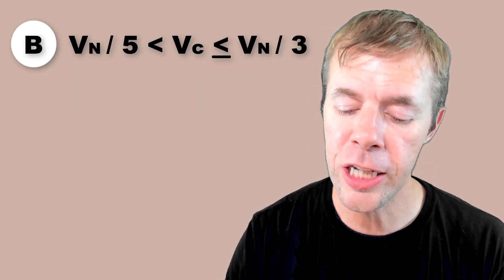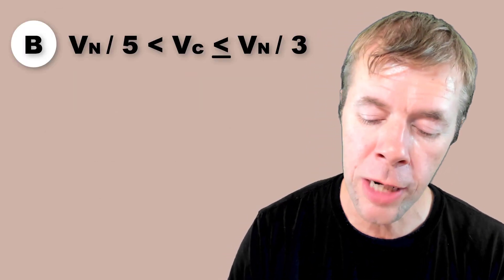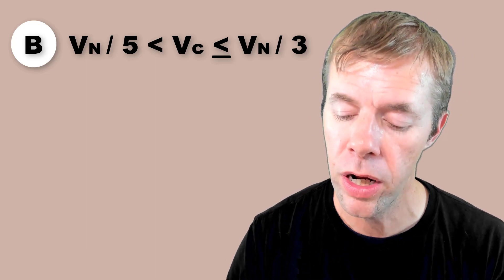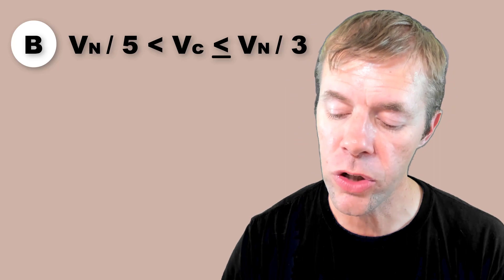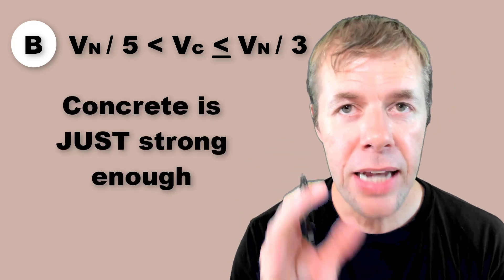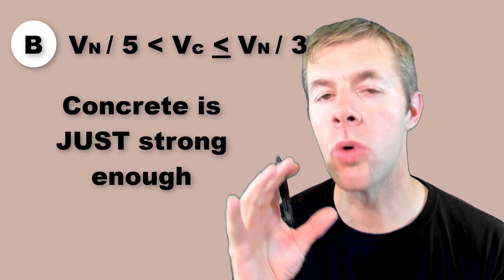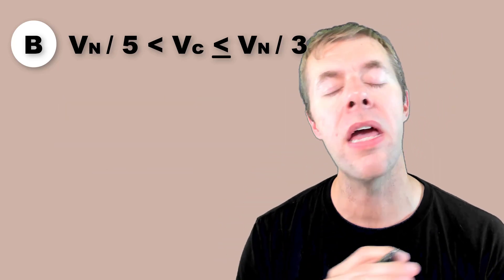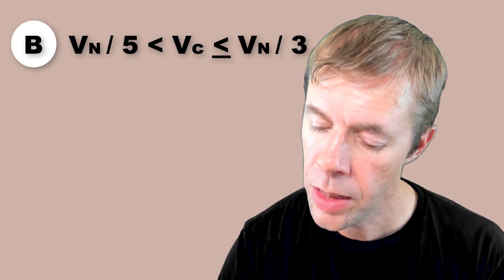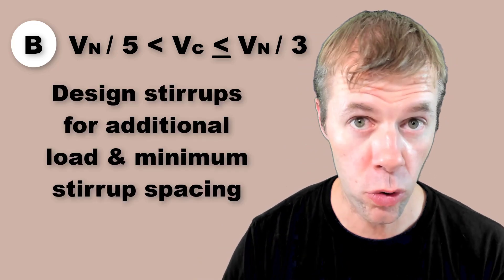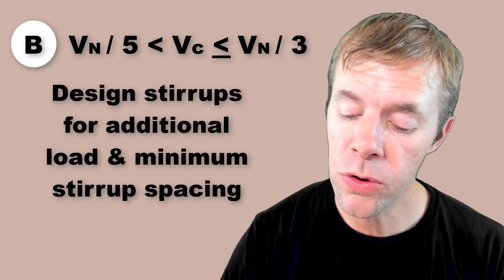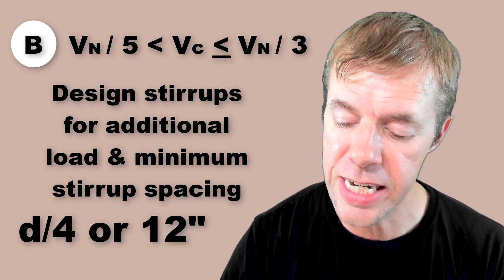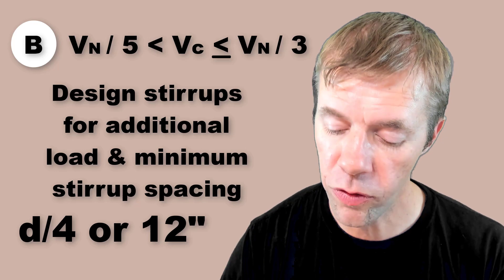In Case B, the capacity of the concrete is stronger — it's between 20% and one-third of what you have to design for. The concrete is just strong enough. ACI 318 will allow this. You have to design the stirrups for the additional load, but you must use a minimum stirrup spacing of d over 4 or 12 inches.